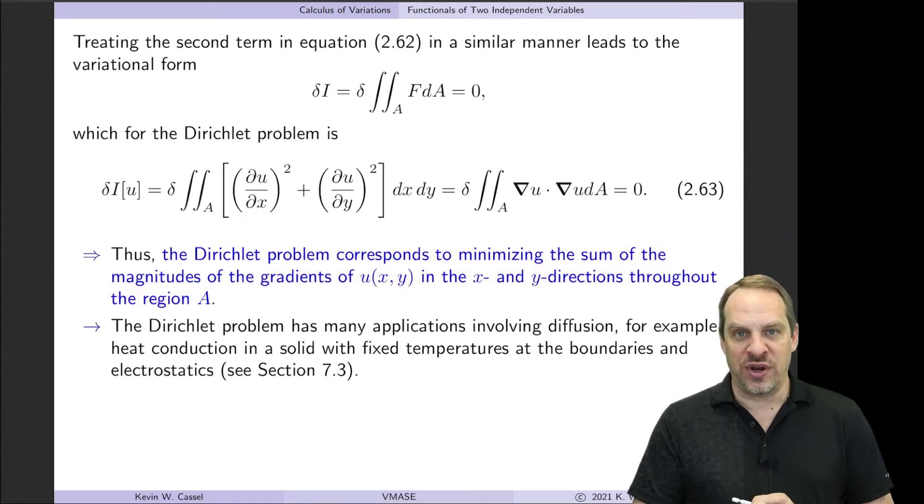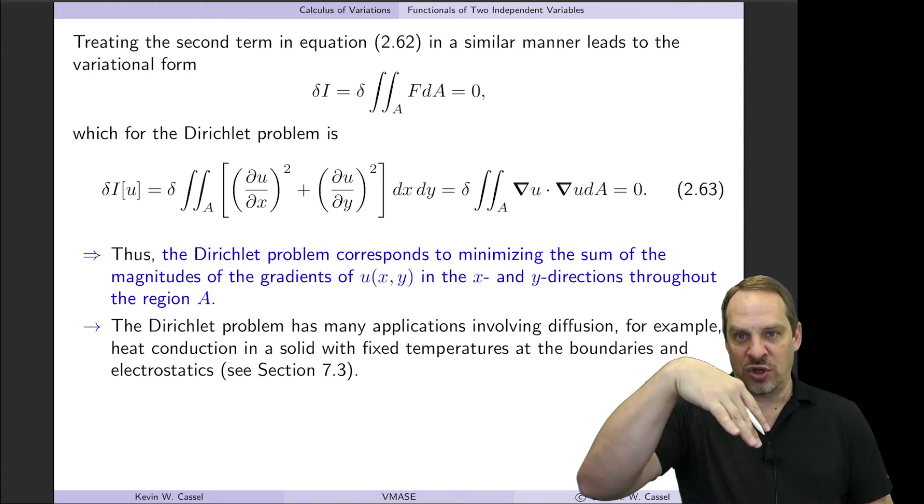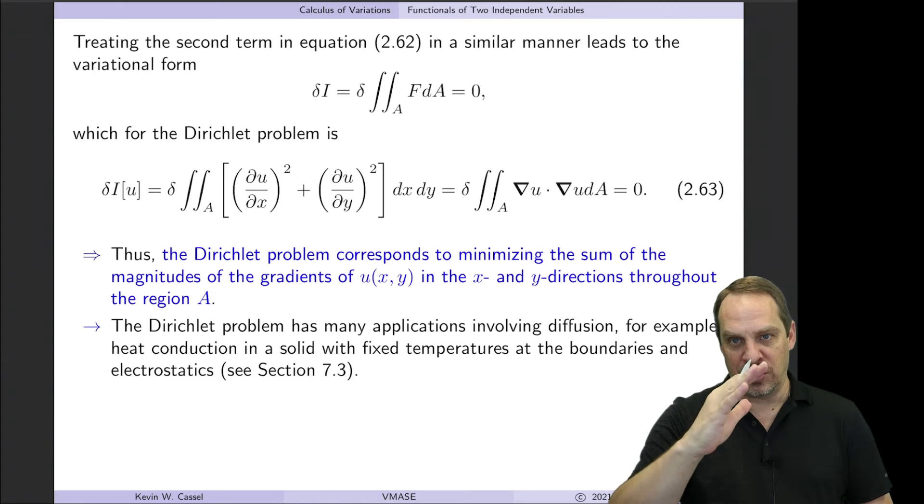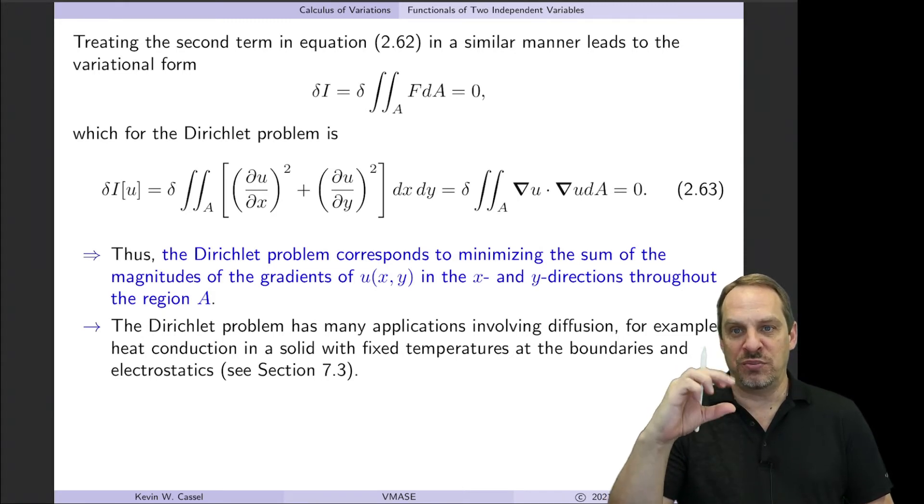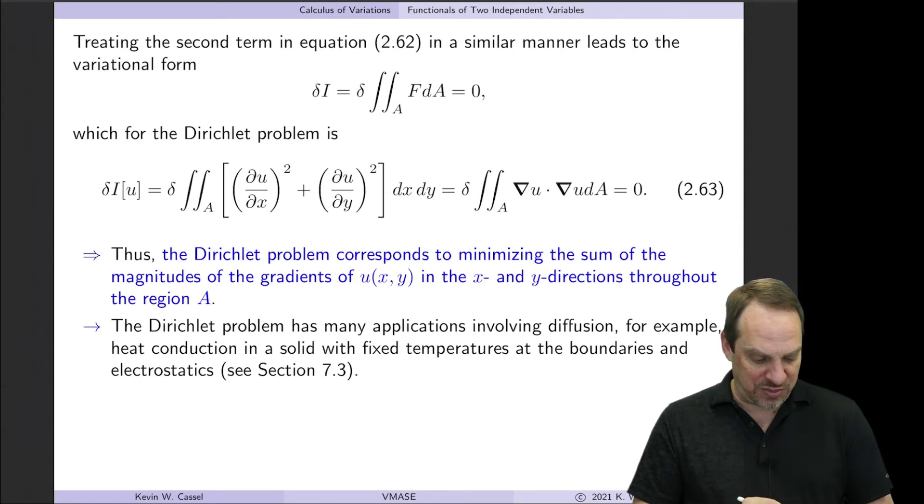∂u/∂x, that's the gradient of U in the x direction. ∂u/∂y, that's the gradient of U, the slope of U in the y direction. You sum the squares. So squaring them means that the sign doesn't matter. So it doesn't matter whether it's large and positive or small or large and negative. You're just minimizing the magnitudes of those gradients and summing them up. And you're doing that throughout the entire region A. So again, we'll talk about that a little bit more in the next slide, what that represents physically.